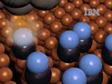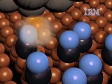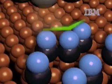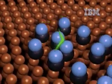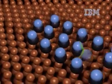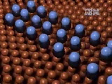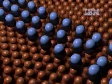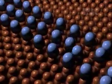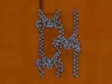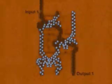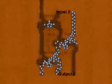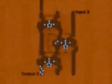Researchers at IBM have experimented with molecular-scaled atomic dominoes. What we see here is a series of these atoms set up to propagate information from one place on the chip to another. When one of the molecules is moved, it sets off a cascading chain reaction that eventually flows to an output. Depending on where the input starts, different outputs are possible.